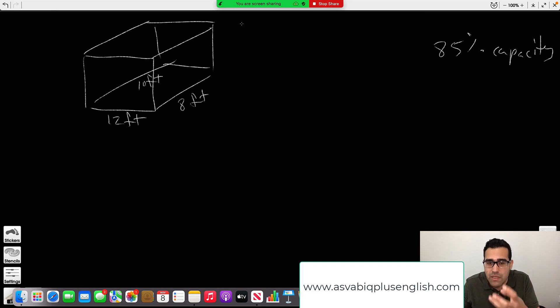...it fills up a three-dimensional figure, the capacity it has. So whenever it says the word capacity, that's related to volume. Whenever it says cubic feet, cubic yards, cubic meters—any cubic unit is related to volume. Those are keywords to know it's volume.